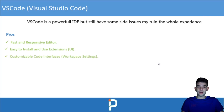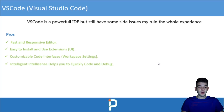You also have customizable workspace settings — you can set user settings that apply globally or workspace-specific settings. This is a feature I really like about VS Code. IntelliSense helps you quickly code, debug, and navigate through your files and projects.